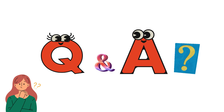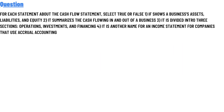Our today's question is: for each statement about the cash flow statements, select true or false. Statement one: it shows a business's assets, liabilities, and equity. Statement two: it summarizes the cash flowing in and out of a business.